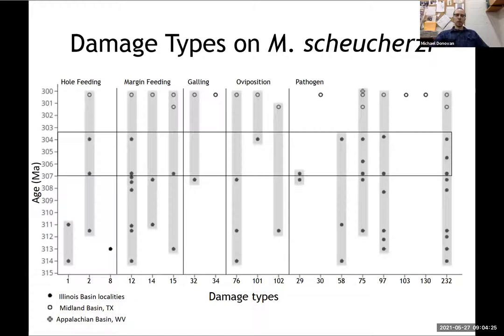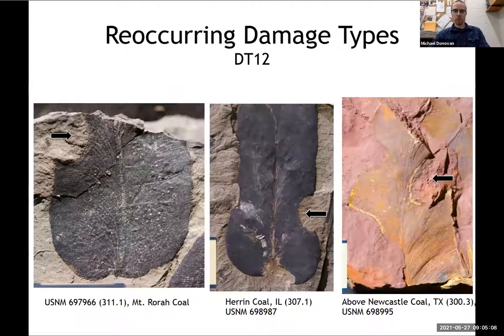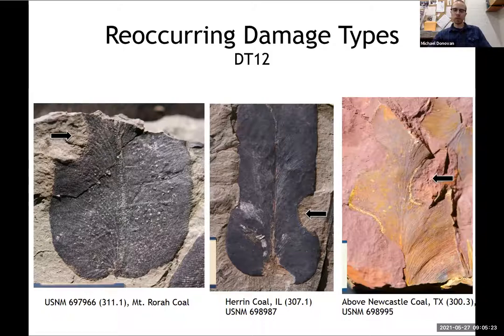This graph shows the occurrences of individual damage types through the range of Macroneuropterus. One thing to notice is that for the most part, once a damage type appears, it appears over and over again at multiple levels. If you look at the uppermost occurrences, it has most of the different damage types that were found in earlier parts of the Pennsylvanian. It appears there is some level of ecological conservatism with these damage types. Once they appear, they are pretty closely associated with their host plant through long periods of time, even moving through multiple glacial and interglacial cycles. These are examples of a recurring damage type — simple margin feeding along the edge of the leaf, a U-shaped cut — appearing over and over at multiple levels.